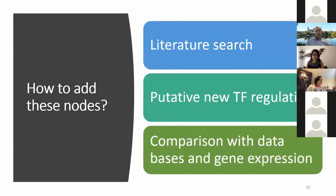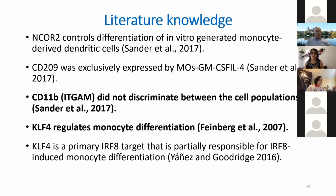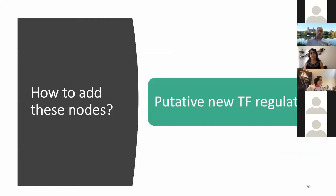We needed three strategies to integrate new genes: another literature search, looking for new transcription regulatory interactions, and checking that our data matches published gene expression. Karen went again and read many papers. For example, we found CD11b (ITGAM) doesn't differentiate well between cell types, so we decided not to include it. But we also found KLF4, which is a very important regulator for monocyte differentiation that was not included — so we really needed to add this transcriptional regulator.